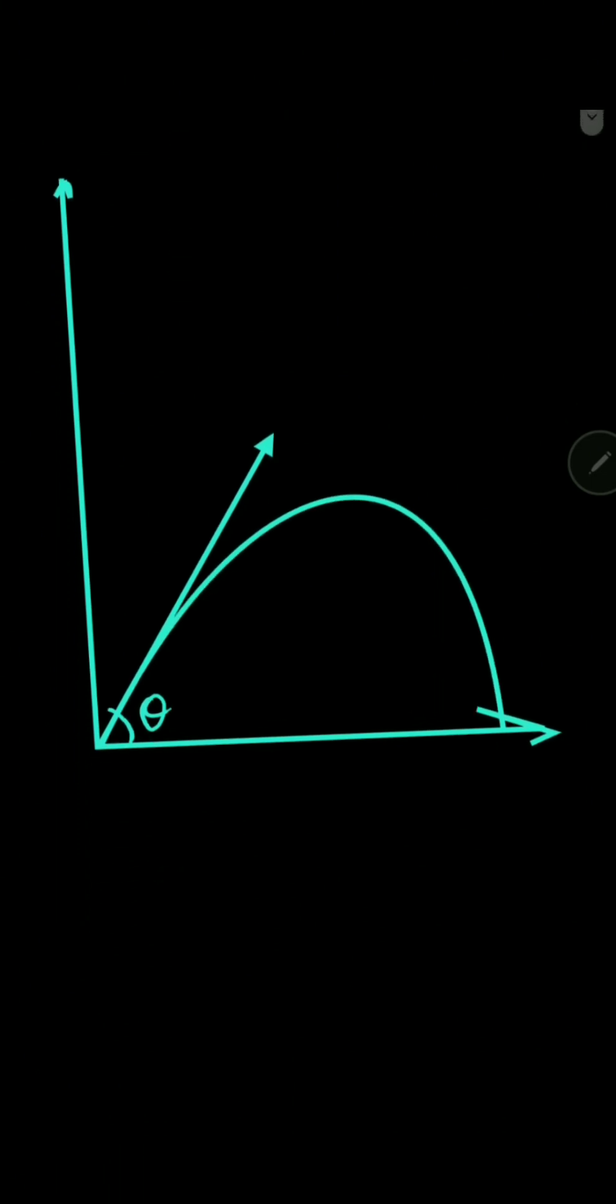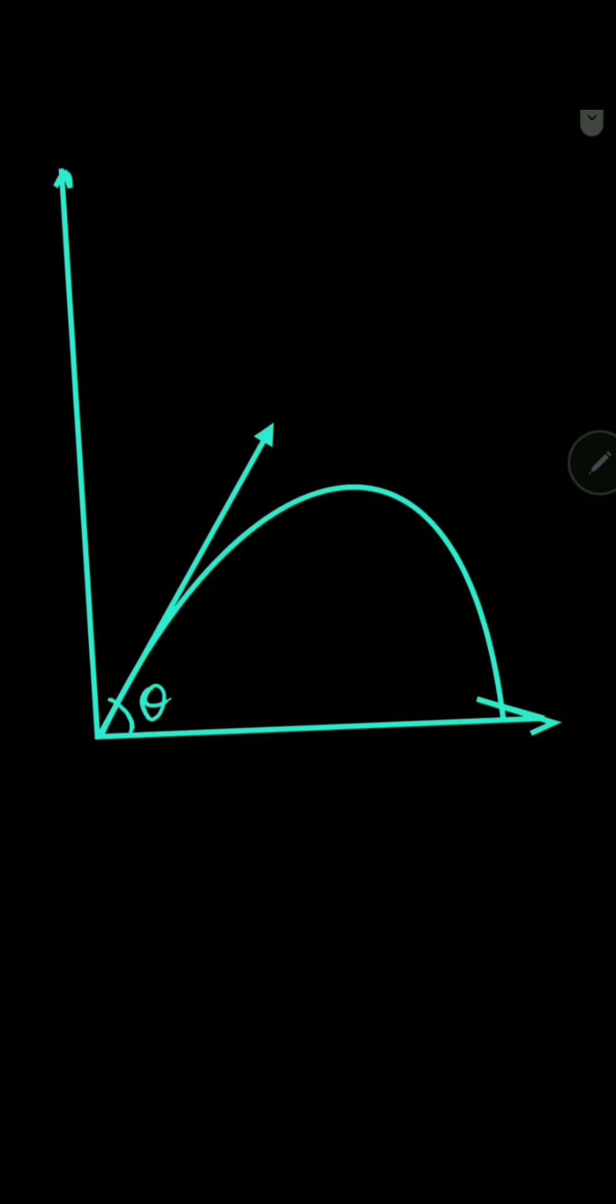This is the diagram which represents the trajectory. Let u be the speed at which it is moving. We have the y-axis and the x-axis. This point is where the particle will start from and it will be moving.